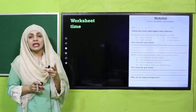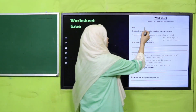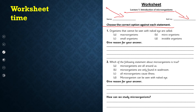Now it is time for the worksheet. You can download it from the description box below this video, or get a printed form from your teacher. Worksheet Lecture Number One: Introduction of Microorganisms. Write your name and roll number, then choose the correct option. First statement: organisms that cannot be seen with the naked eye are called — microorganisms, macro organisms, small organisms, or invisible organisms. The answer is microorganisms, because micro means extremely small and tiny.